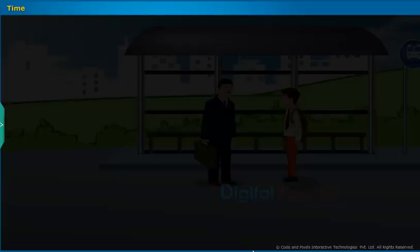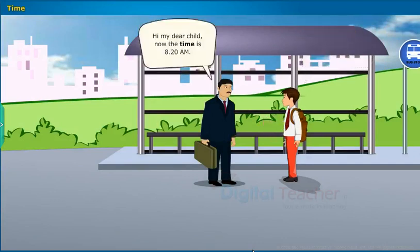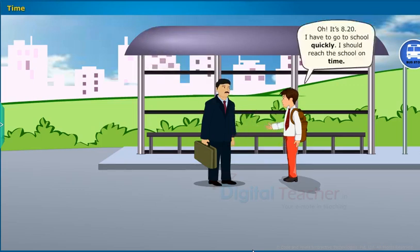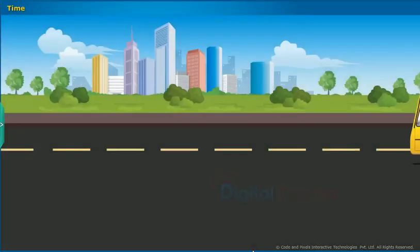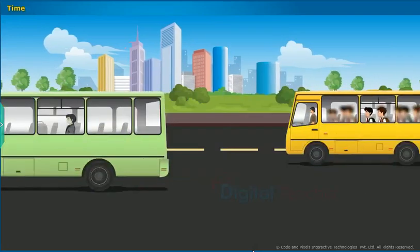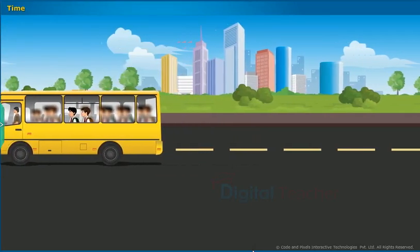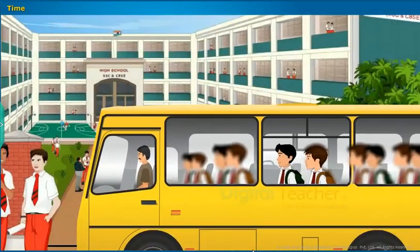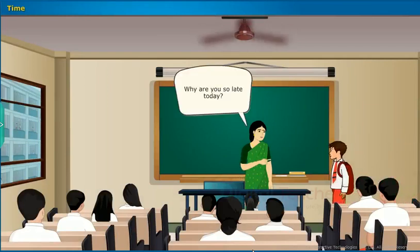Let us observe the given scenario based on time. Hi, uncle. Could you please tell me what the time is? I forgot to put on my watch today. Hi, my dear child. Now the time is 8:20 a.m. Oh, it's 8:20. I have to go to school quickly. I should reach the school on time. Hey, look. That bus is moving very fast. Why is this bus so slow?